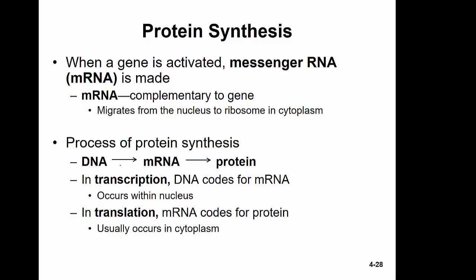The basic process of protein synthesis starts with a segment of DNA — the gene — which is used to produce mRNA. The first process, where DNA codes for mRNA in the nucleus, is called transcription. The second process, going from mRNA to a protein in the cytoplasm, is called translation.